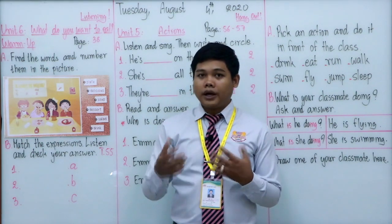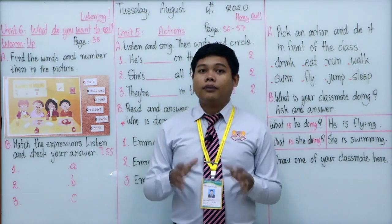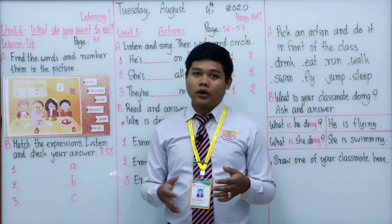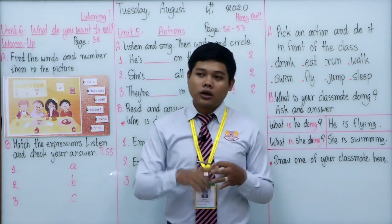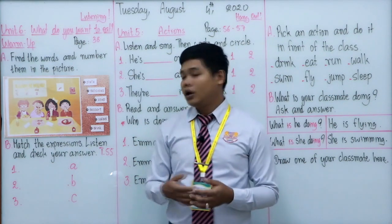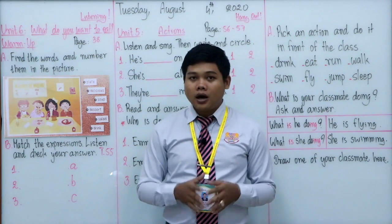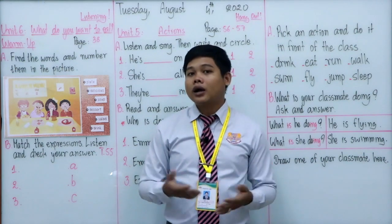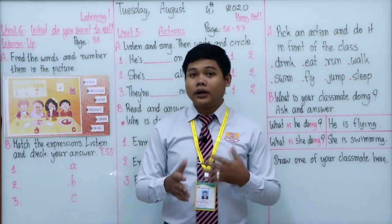Number five is salad — it's a kind of food made from raw vegetables mixed with a sauce like mayonnaise. Number six is drink — it's a kind of liquid. Examples of drinks include coffee, milk, orange juice, hot chocolate, and water. For example: what kind of drink do you like? I like Coca-Cola, so I like to drink Coca-Cola.